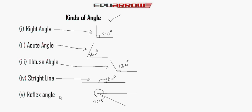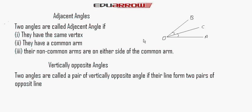Now we read about the adjacent angle. Adjacent angles can be easily understood using this figure. Angle AOC is adjacent to angle BOC — these are two adjacent angles.